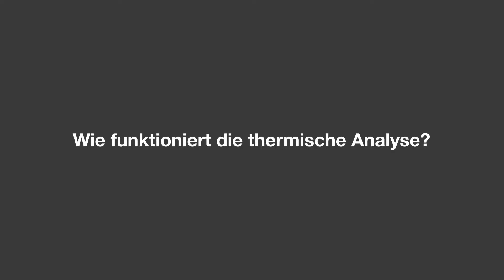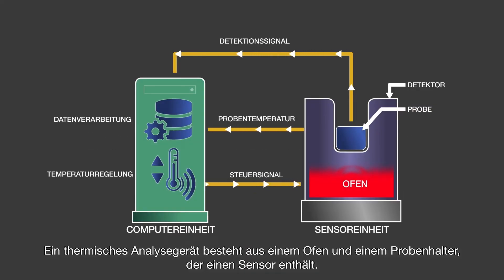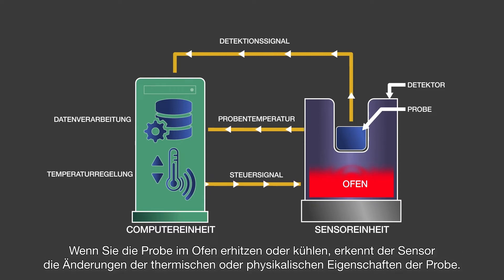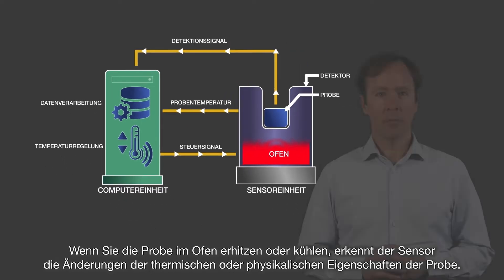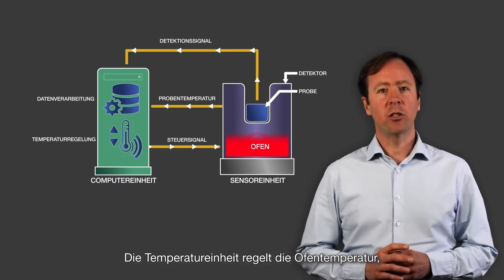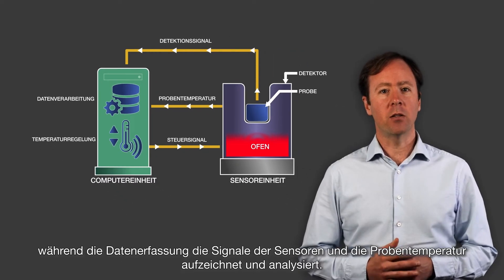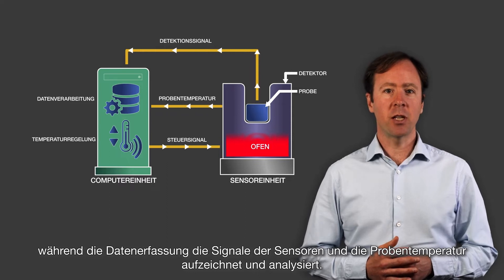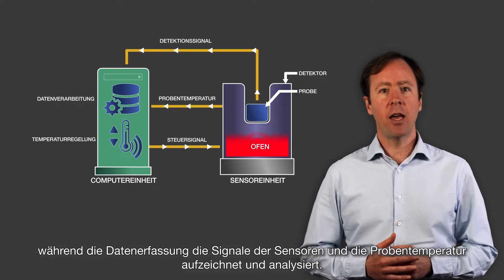How does thermal analysis work? A thermal analysis instrument consists of a furnace and a sample holder, which includes a sensor. As you either heat or cool the sample in the furnace, the sensor detects the changes in the sample's thermal or physical properties. The temperature control unit controls the furnace temperature, whilst the data recording unit records the signal of the sensors and sample temperature and analyzes them.